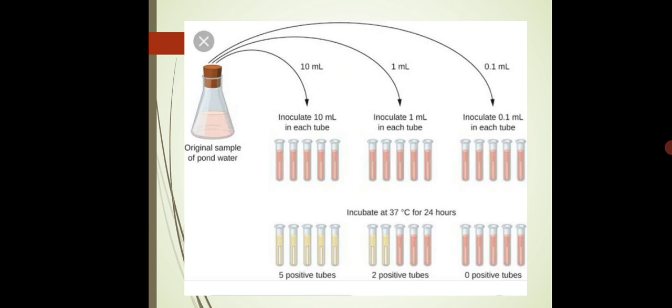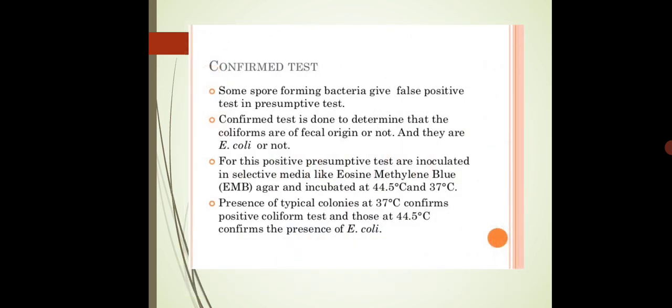We can determine the MPN index using the MPN table, which is a standard table. This is all about the presumptive test. Now in this lecture we are going to discuss the second test under the MPN, that is the confirmed test.